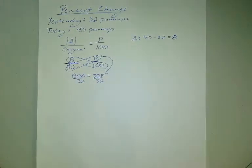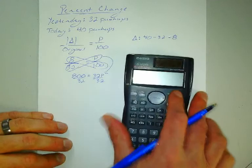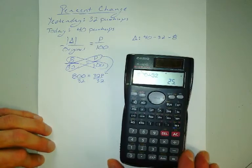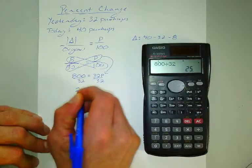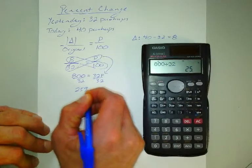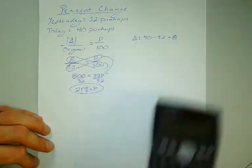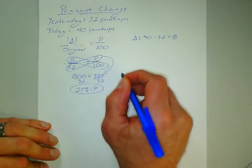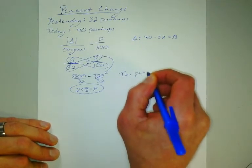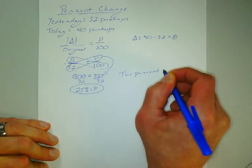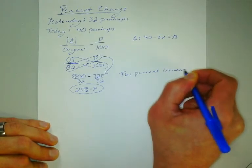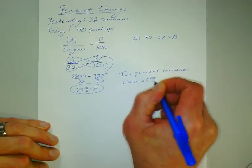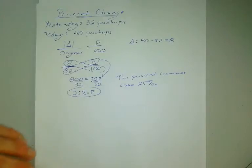And we could do long division here but for the sake of time let's get our calculators out. So 800 divided by 32 gives us 25. Nice, I knew that was going to happen. So we have 25 percent equals p. And you guys know my rule for answering. I like to answer in a sentence. So the percent change, and in this case it's increase, the percent increase was 25 percent. So I did 25 percent more push-ups today than I did yesterday.